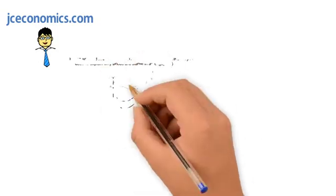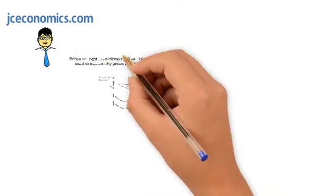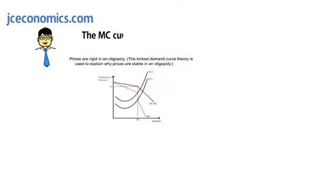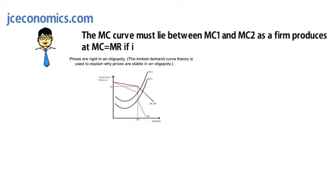This produces a discontinuous MR curve. The MC curve must lie between MC1 and MC2 as a firm produces at MC equals MR if it wants to maximize profit at QE.